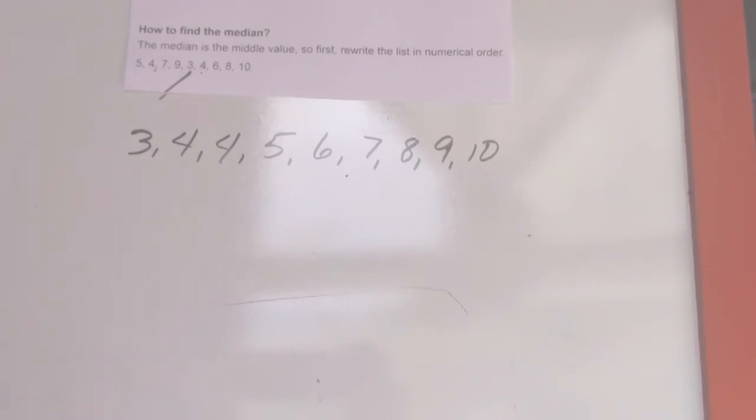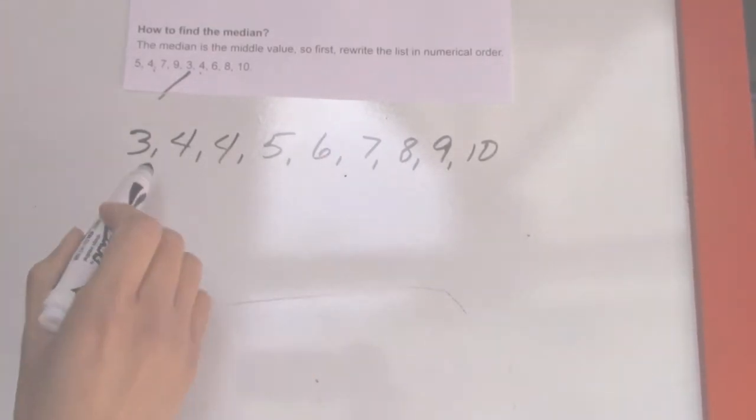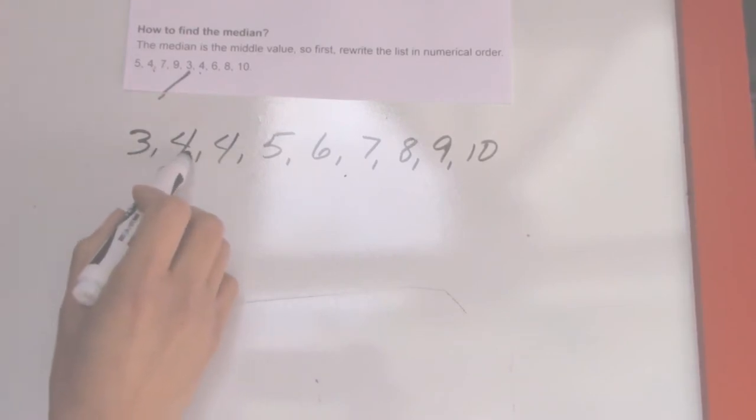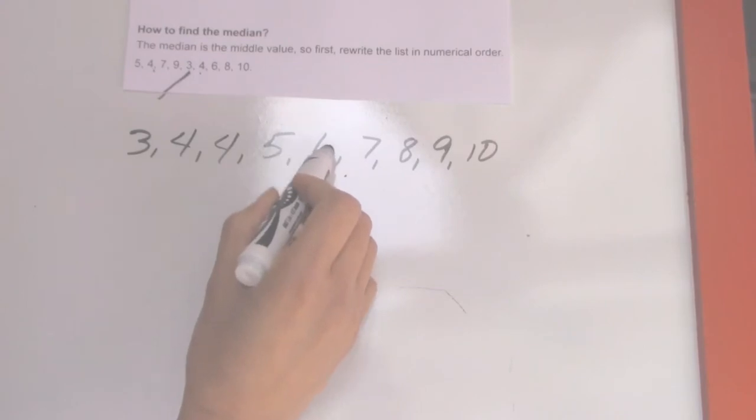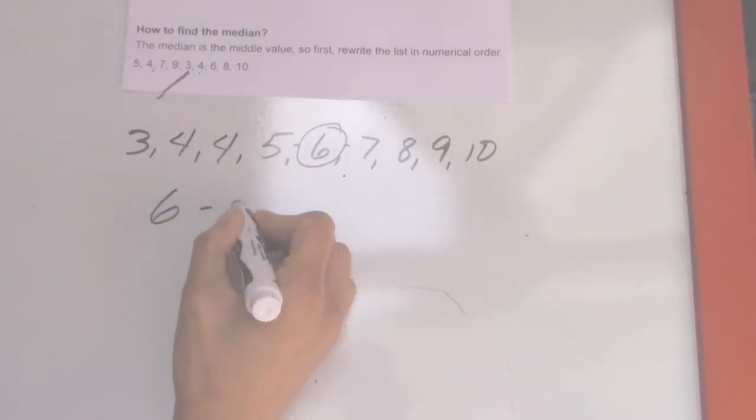Let's count - we need to find the middle, right? So one, two, three, four - that's four here, and one, two, three, four. So the middle is 6. The answer is 6, median.